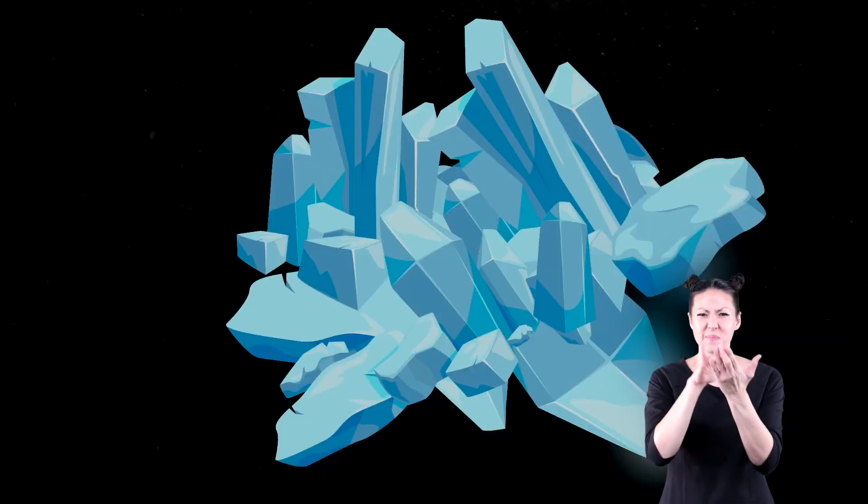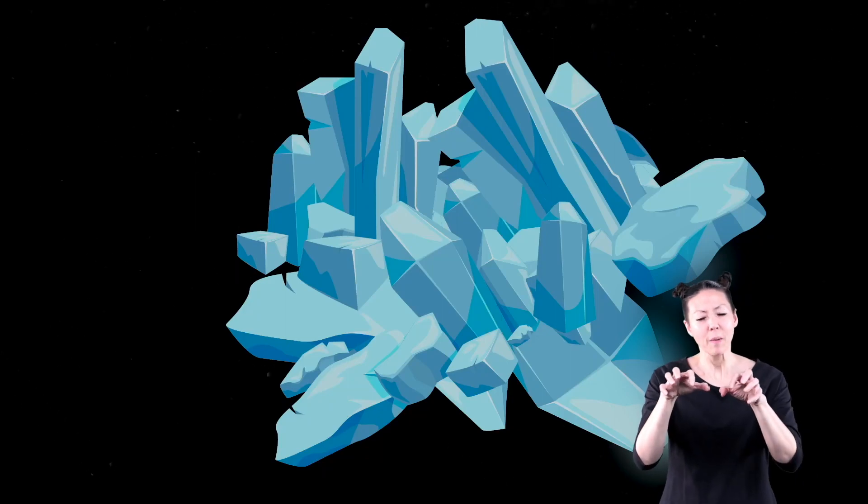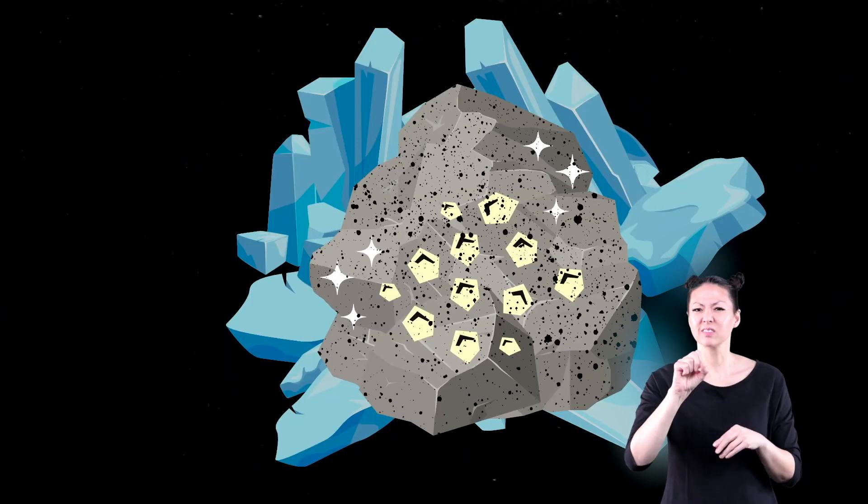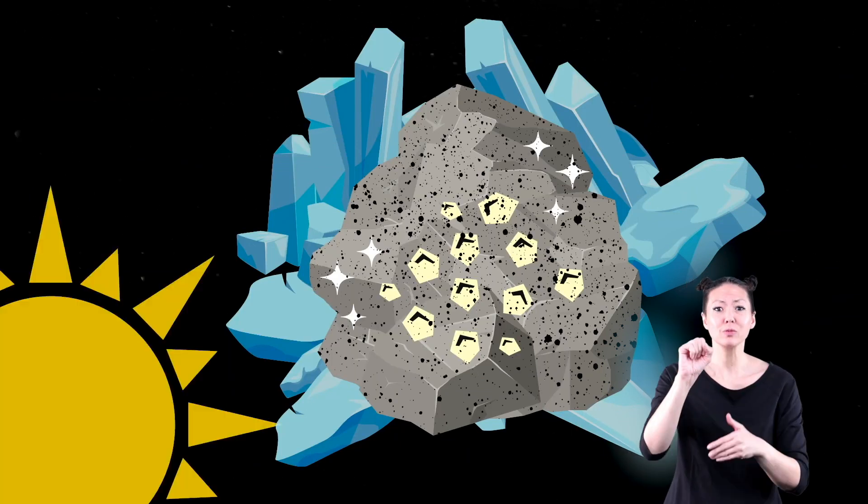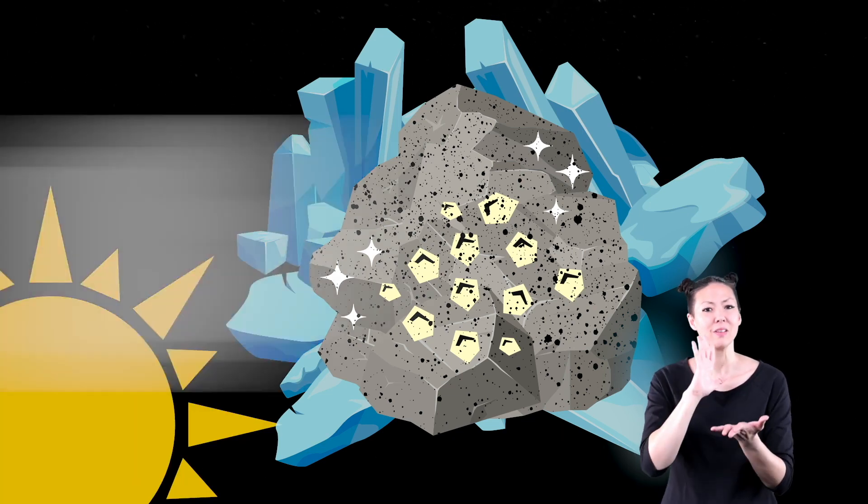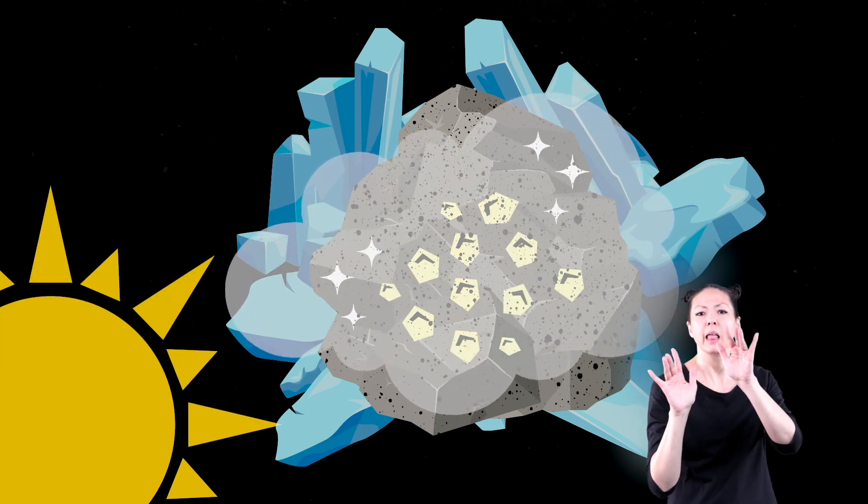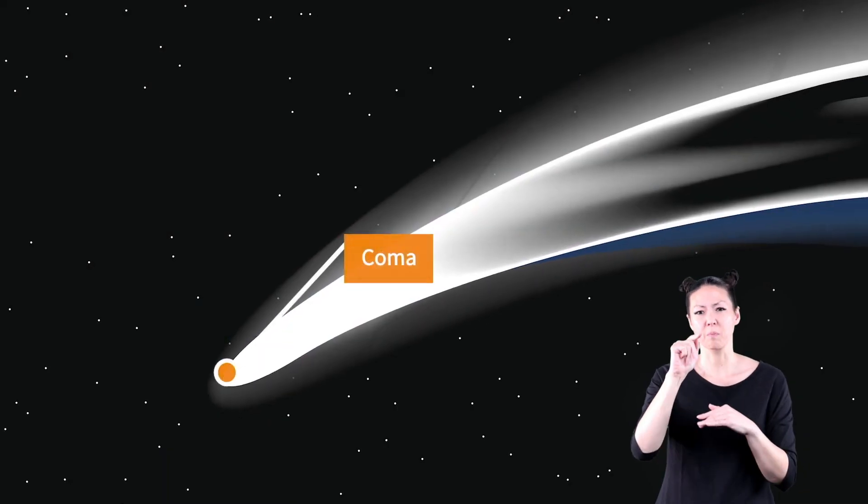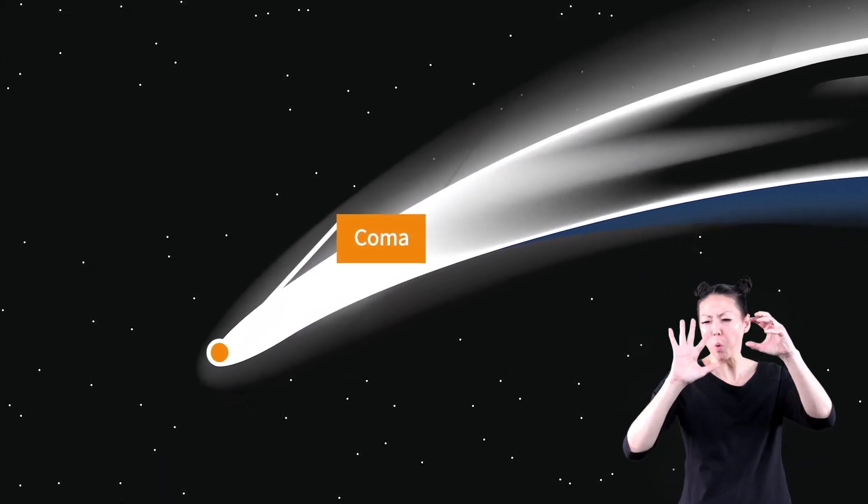Comets have an icy middle which is made up of water and gases that are frozen. They are mixed with bits of rock and metal and are covered by a layer of black dust. When a comet gets close to the sun, the heat from the sun causes the ice to melt and change into a gas. Dust particles spread out around the center of the comet or the nucleus. These dust particles create a cloud at the head of the comet called a coma.